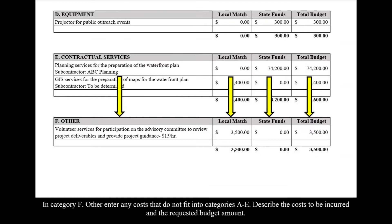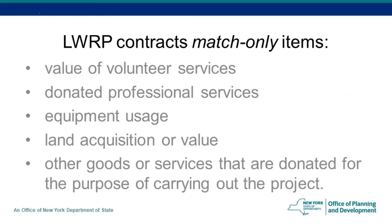In Category F, Other, enter any costs that do not fit into Categories A through E. Describe the costs to be incurred and the requested budget amount. For LWRP contracts, this category may include match-only items such as the value of volunteer services, donated professional services, equipment usage, land acquisition or value, and other goods or services that are donated for the purpose of carrying out the project.